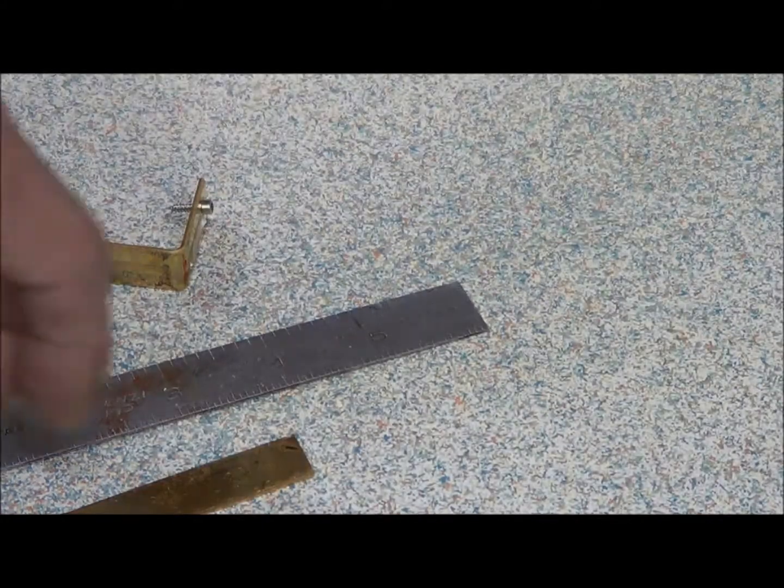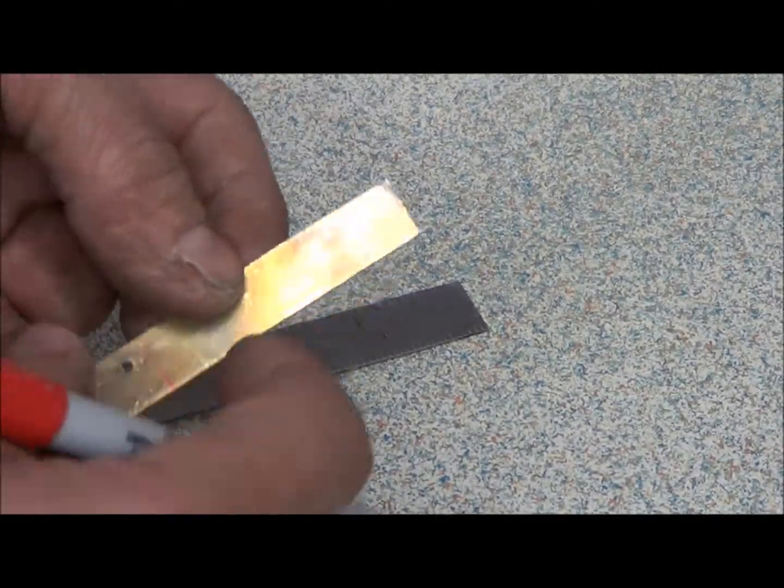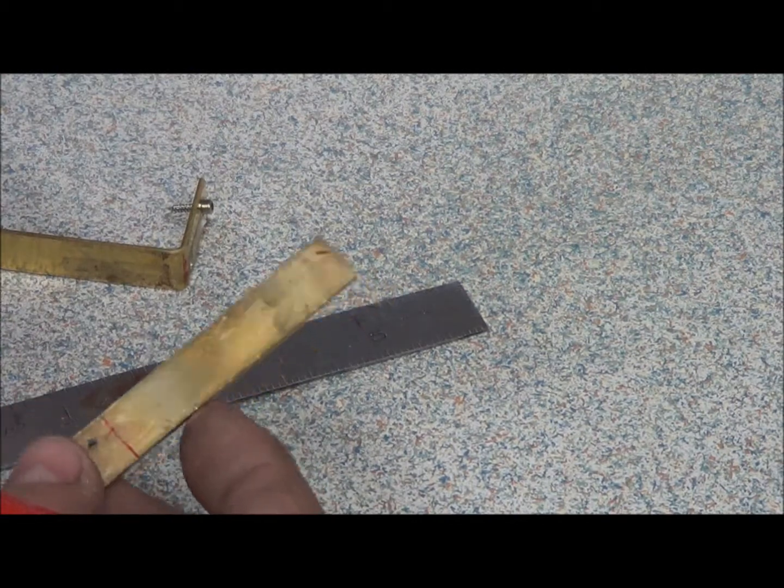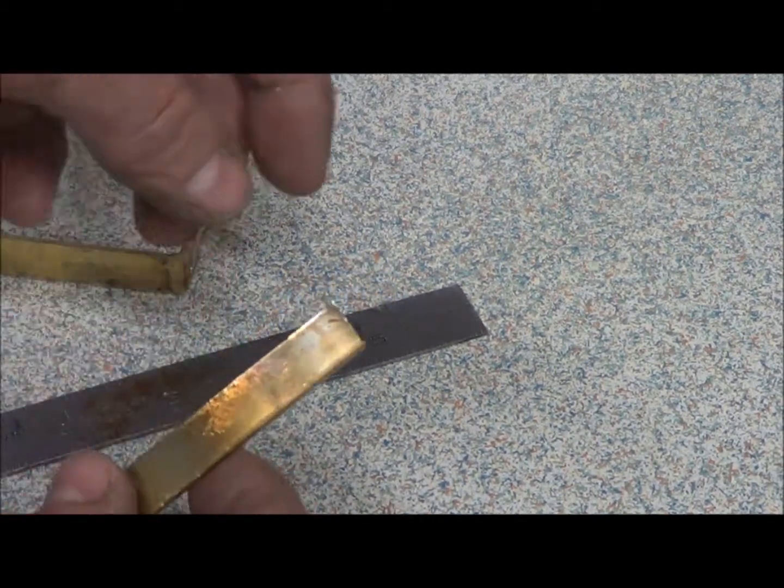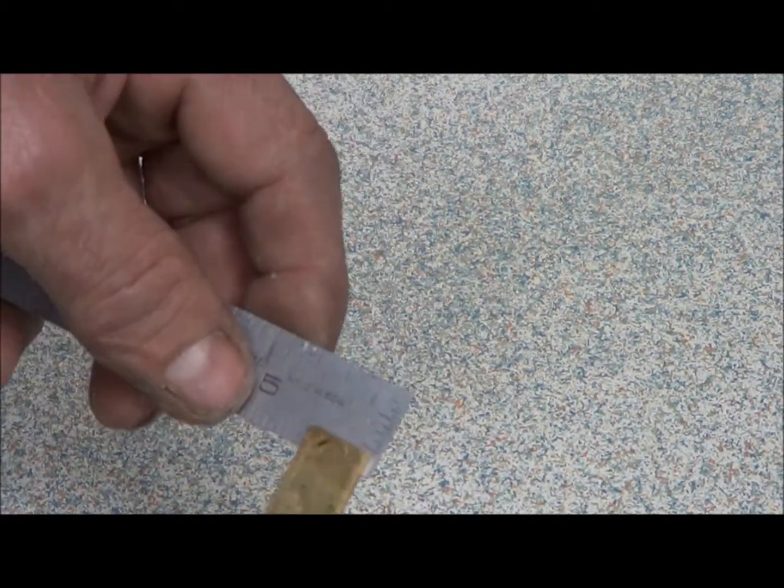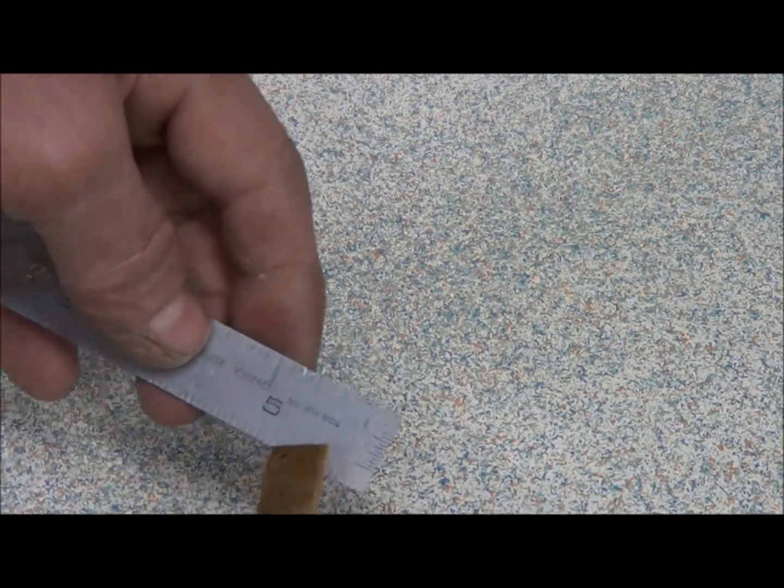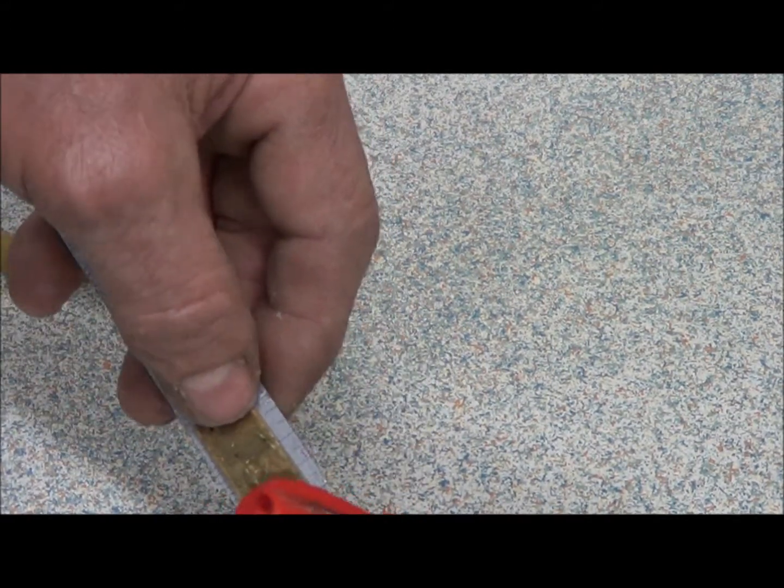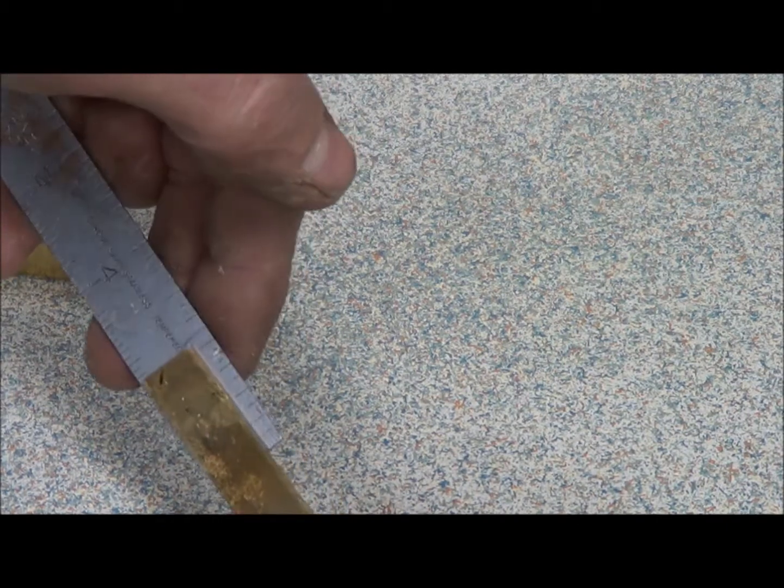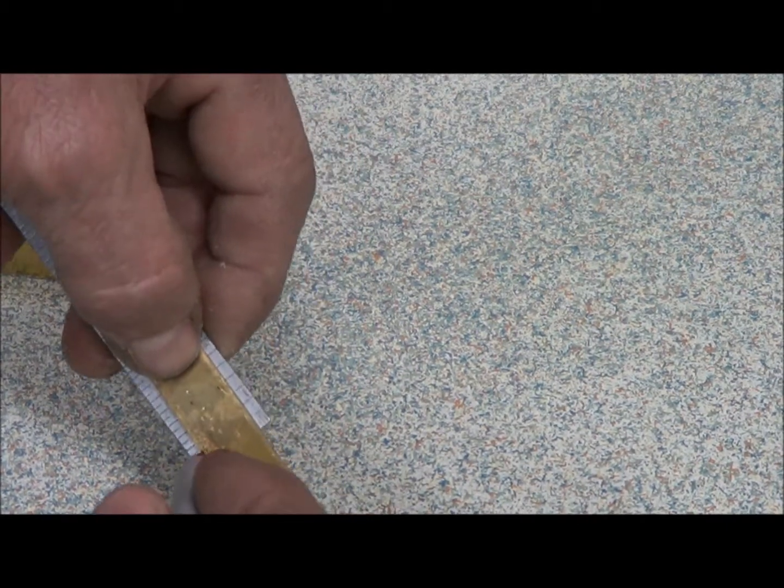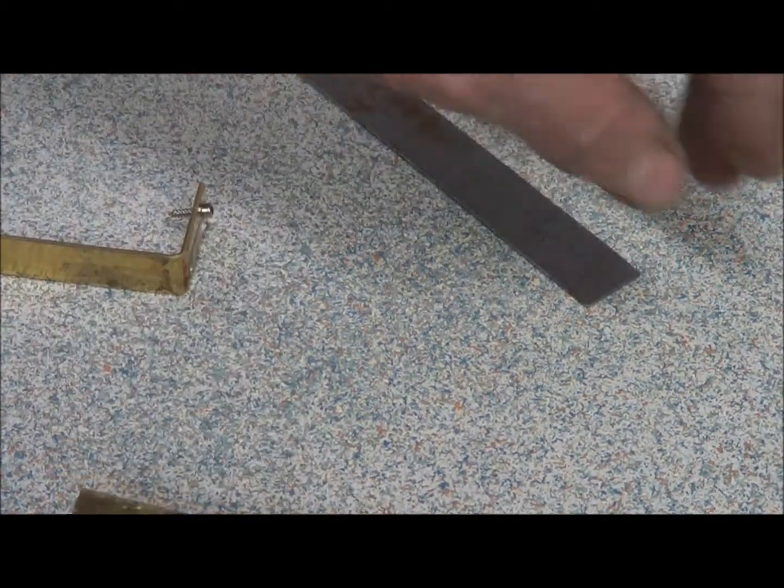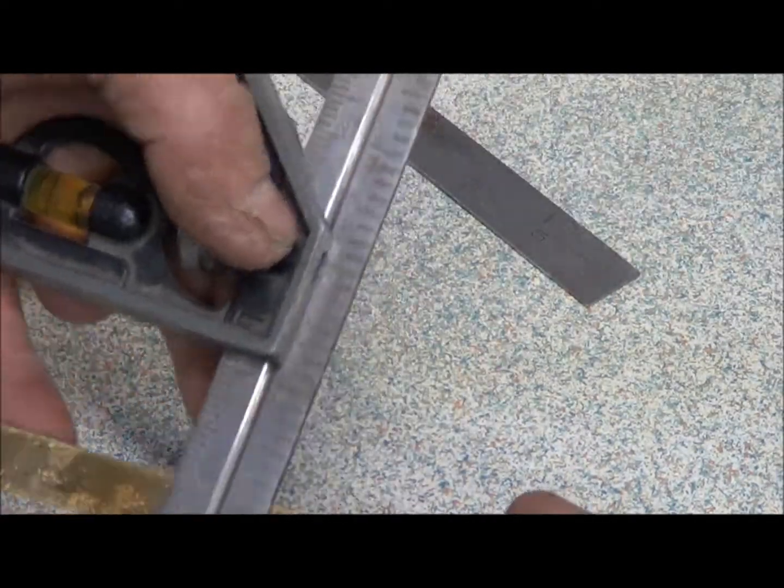So anyway, what I'm doing - I get a piece of brass flat stock, and I believe this is like a half an inch wide. Yes it is. And what I'm doing is I'm measuring up about an inch, make my mark, take my little mini square.